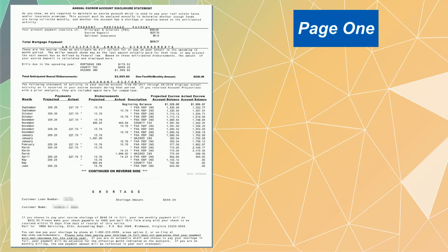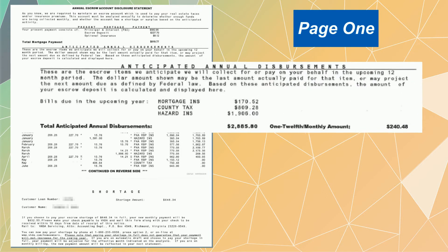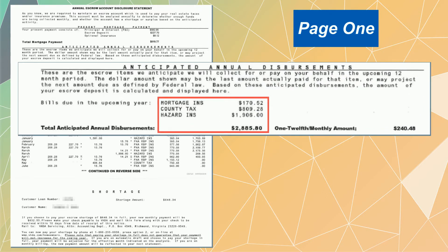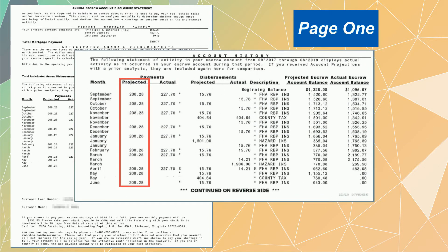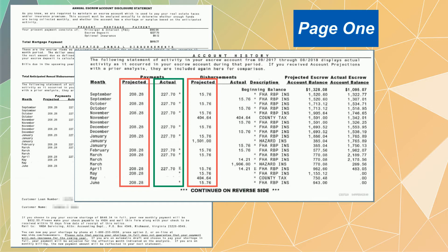The first page of the escrow disclosure lists the anticipated total expenses that Virginia Housing will pay on your behalf using the funds in the escrow account. It also identifies the estimated amount of money that would be added to the escrow account and the estimated payments dispersed from it. These amounts were determined in last year's escrow analysis and are then compared with the actual amount of money added to the account and the payments dispersed from it during the current year.